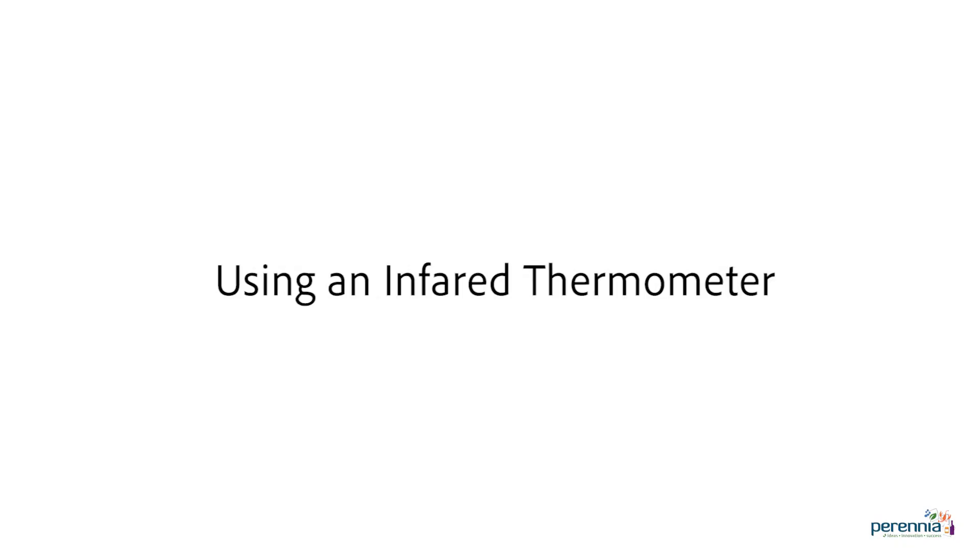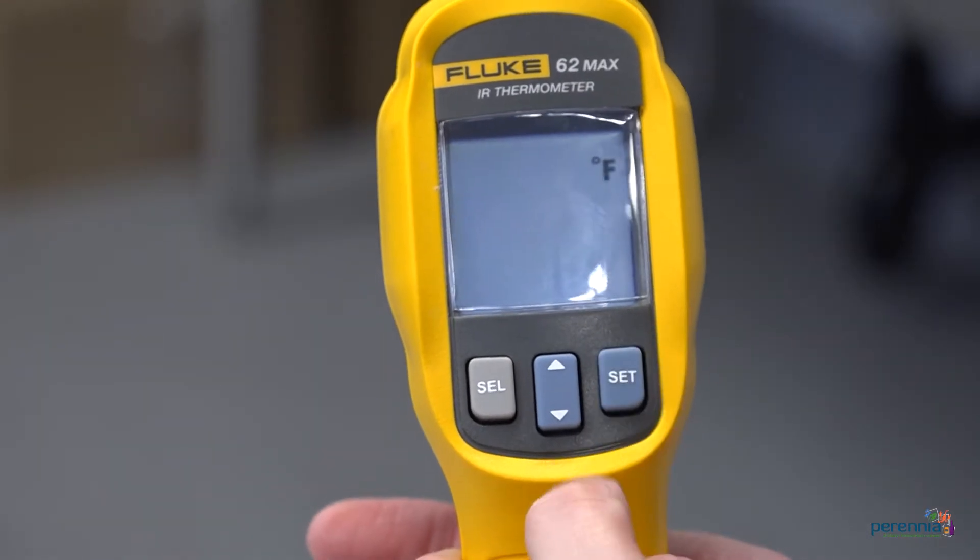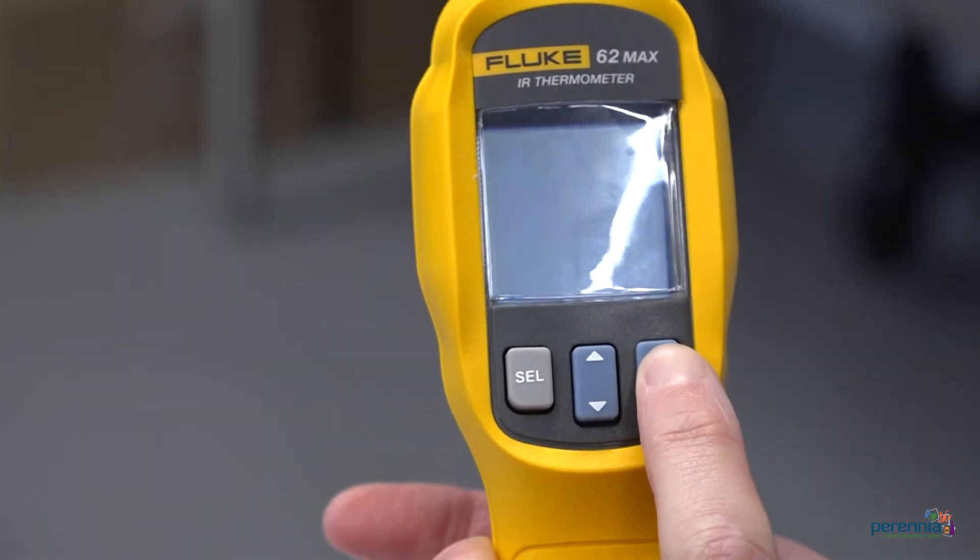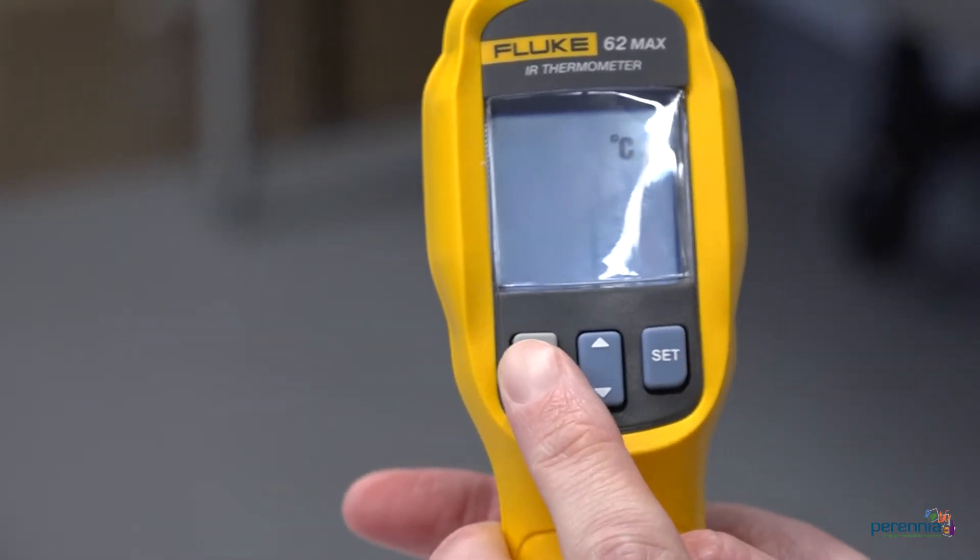To use your infrared thermometer, step one is to set the infrared thermometer to the desired units you wish to measure in, for example Celsius or Fahrenheit.